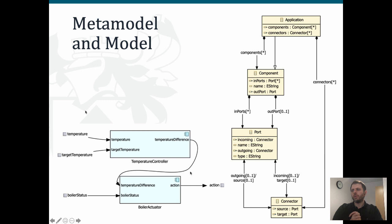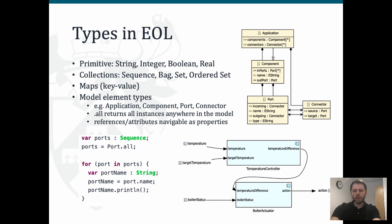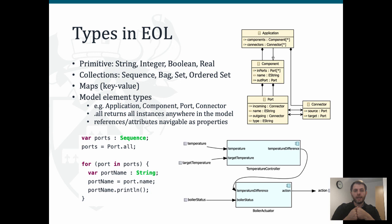We're going to stick to the example from yesterday where we have our components meta model and a model that conforms to it. As a reminder: we have applications containing components, components contain ports, and we have connectors connecting ports together. Now let's talk about types in EOL. EOL provides some built-in primitive types that you would expect, like String, Integer, Boolean, and Real.